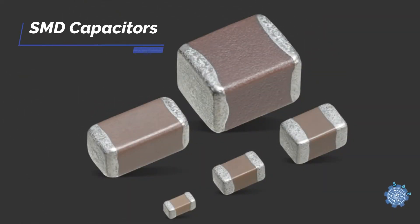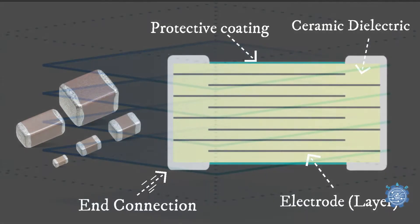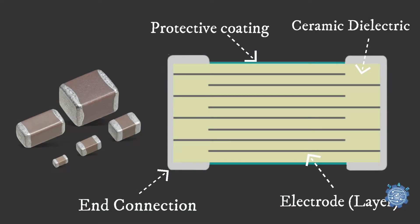SMD capacitors have more layers and are also named MLCC. They consist of more individual layers stacked in parallel.